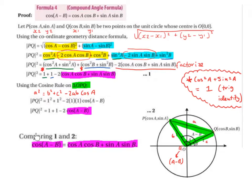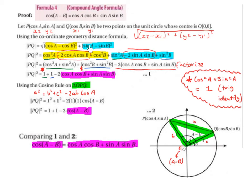Now we compare our two equations. Equation 1 from the distance formula: PQ² = 1 + 1 - 2(cos(a)cos(b) + sin(a)sin(b)). Equation 2 from the cosine rule: PQ² = 1 + 1 - 2cos(a - b). Since both equal PQ², the terms 1 + 1 - 2 cancel, leaving cos(a)cos(b) + sin(a)sin(b) = cos(a - b). So we have derived our compound angle formula: cos(a - b) = cos(a)cos(b) + sin(a)sin(b).